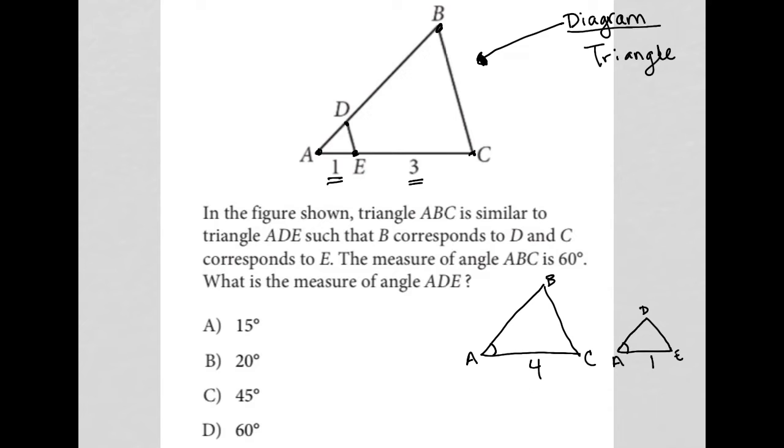And then what else does this question say? So triangle ADE, such as B corresponds to... Okay, it's similar to triangle ADE, such that B corresponds to D and C corresponds to E. So these guys. So in order for triangles to be similar, all the angles must be the same. The corresponding angles must be congruent.